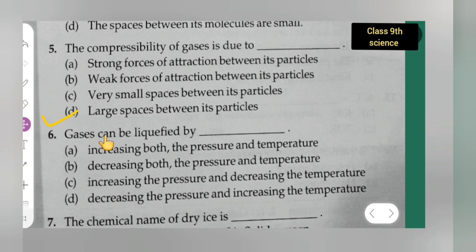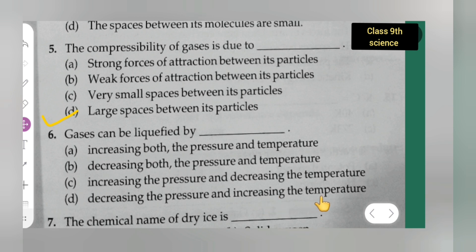Question 6: Gases can be liquefied by — option A is increasing both pressure and temperature, option B is decreasing both pressure and temperature, option C is increasing the pressure and decreasing the temperature, option D is decreasing the pressure and increasing the temperature. The correct answer is option C — increasing the pressure and decreasing the temperature.